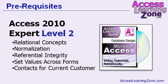This class follows Microsoft Access 2010 Expert Level 2. In levels 1 and 2, we covered relational concepts, normalization, working with multiple tables, referential integrity, cascade updates and deletes, setting values across forms, and opening up the contacts form for the current customer. All of these things are very important before you begin today's class. If you take today's class without having taken levels 1 and 2 of the Expert Series, you'll be missing a lot of the foundation material — how we built the contact form, the customer form, and how we related the two together. So I strongly recommend you watch levels 1 and 2 first.